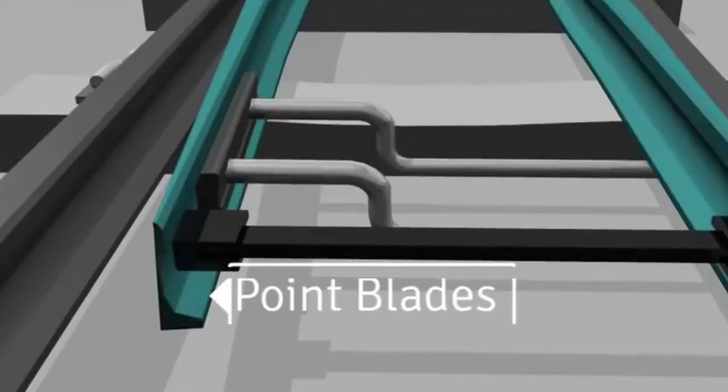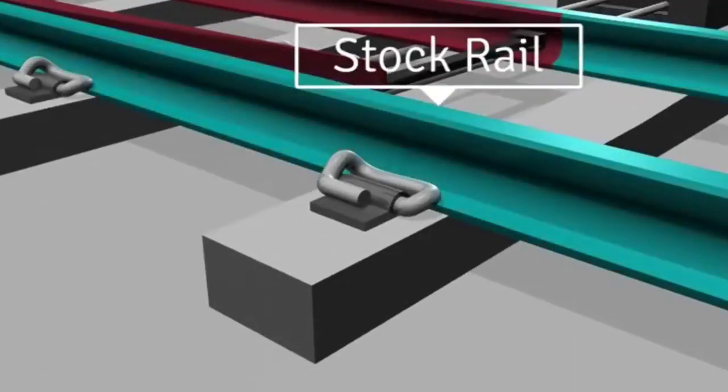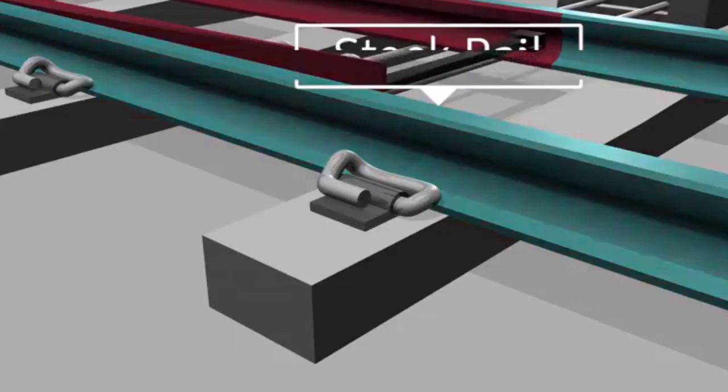Switch rails or point blades are the movable rails which guide the wheels towards either the straight or the diverging track. Stock rails are the running rails immediately alongside of the switch rails, against which the switch rails lay when in the closed position.